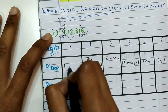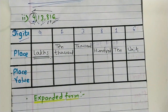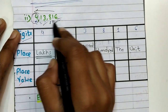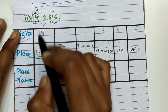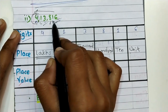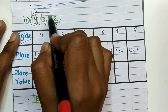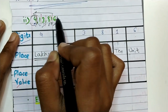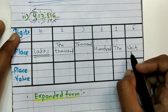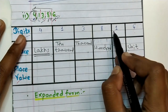Place of three is thousands place. Place of one is ten thousands place. And lastly place of four is lakhs. Now we calculate place values of each digit: place value of six equals six into one, which is six. Place value of one equals one into ten, which is ten.